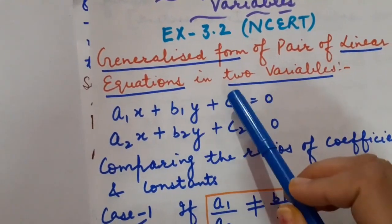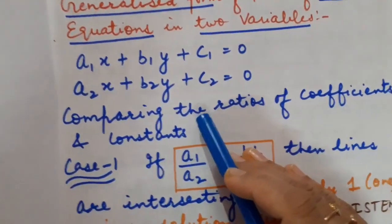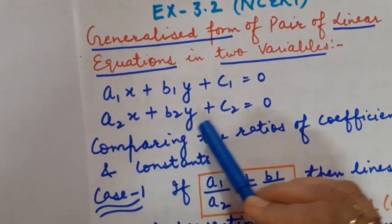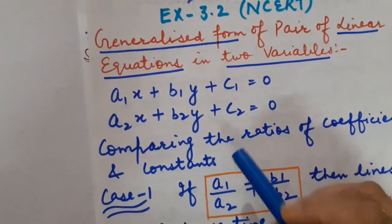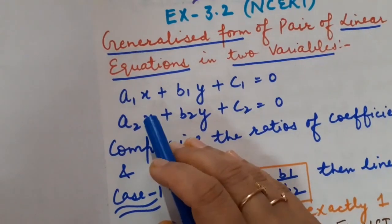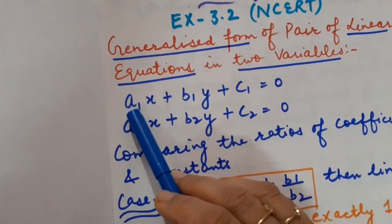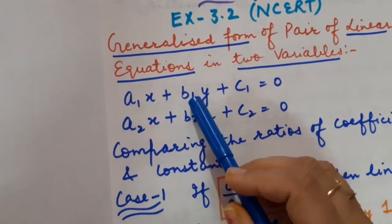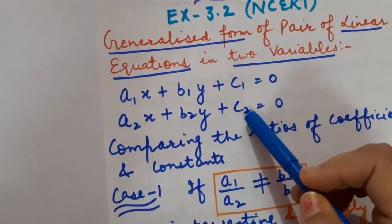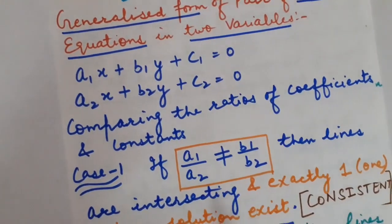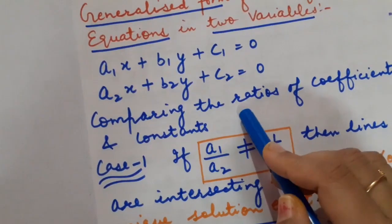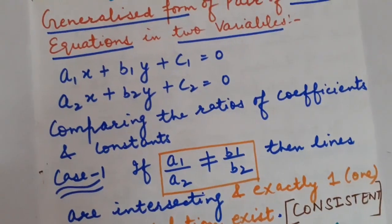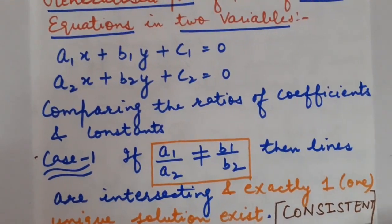The generalized form of a pair of linear equations in two variables is: a1x + b1y + c1 = 0 and a2x + b2y + c2 = 0. Here a1 and a2 are the numerical coefficients of variable x, b1 and b2 are the numerical coefficients of y, and c1 and c2 are the constant terms. On the basis of the ratio of these coefficients and constants, we can judge whether the lines will be intersecting, coinciding, or parallel.